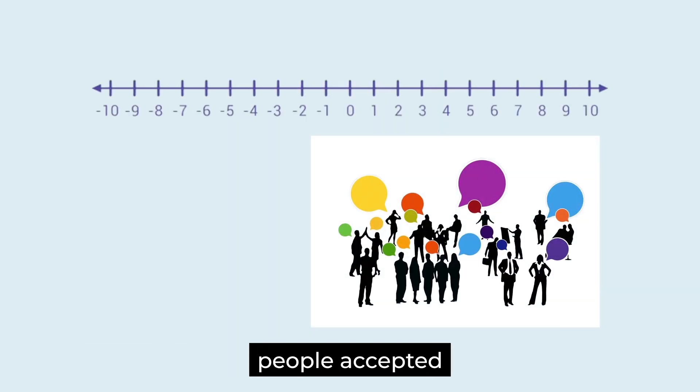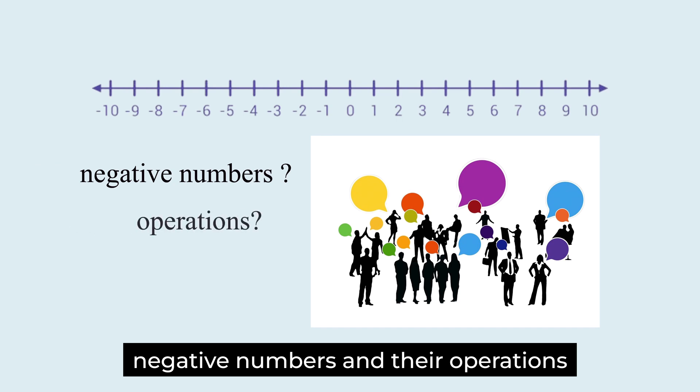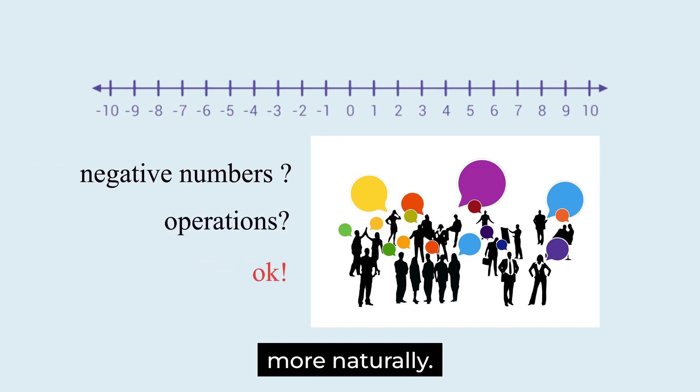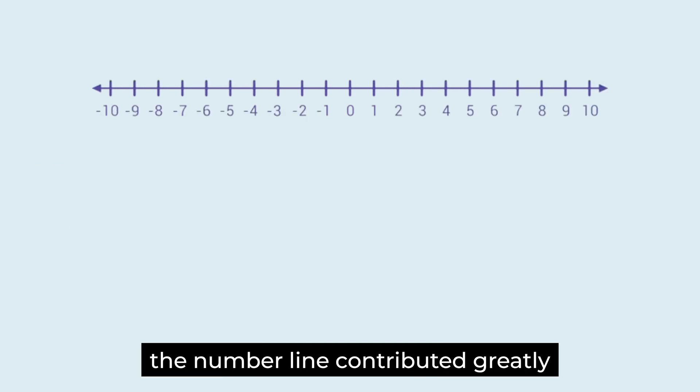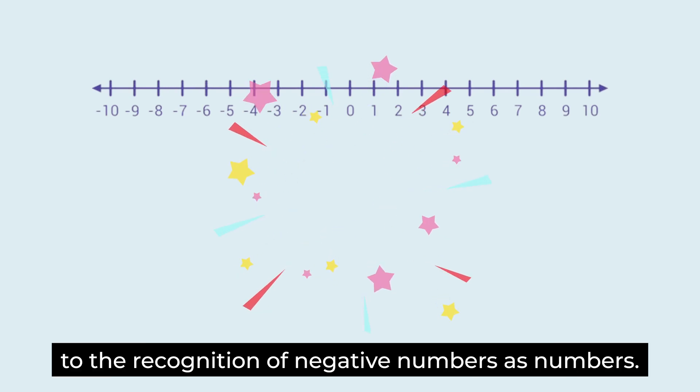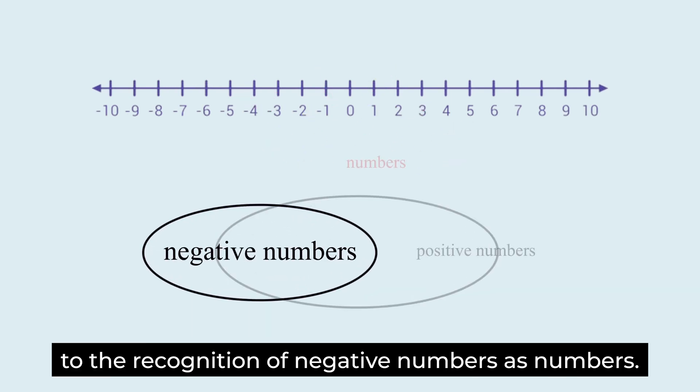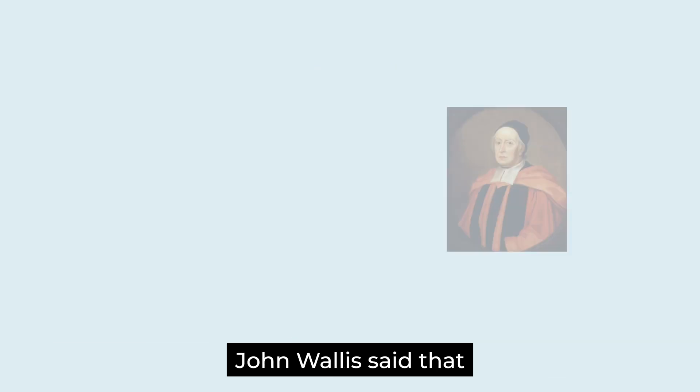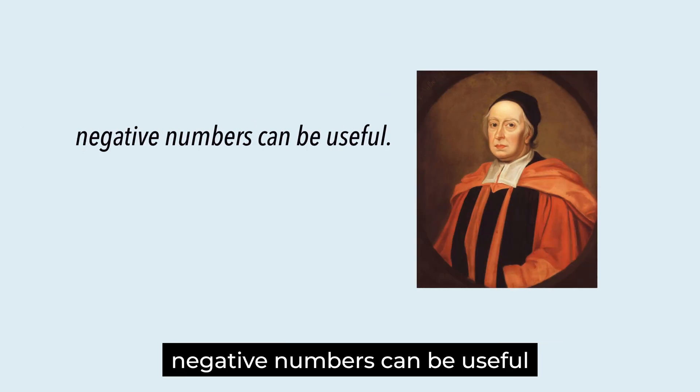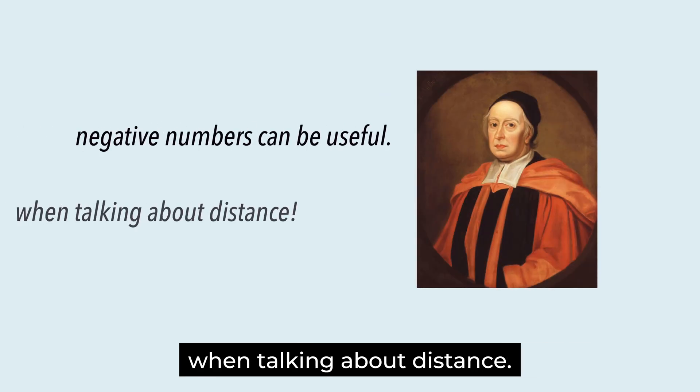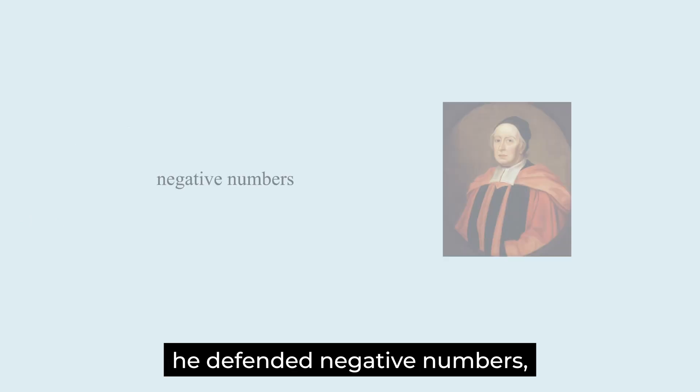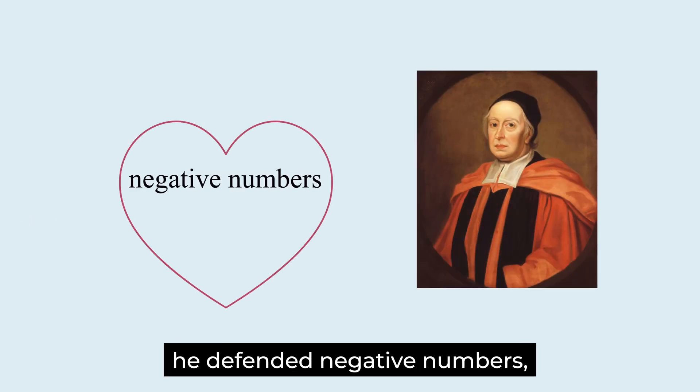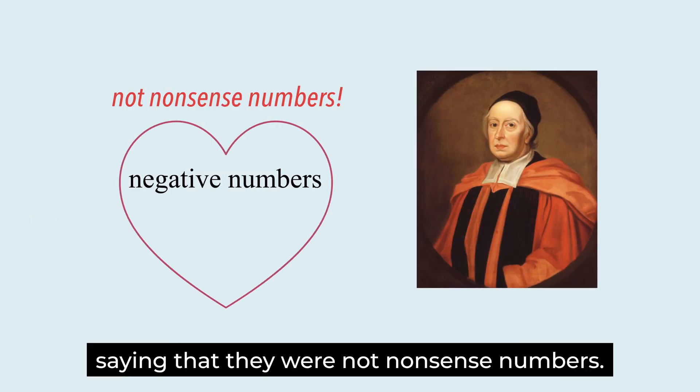Thanks to this, people accepted negative numbers and their operations more naturally. The number line contributed greatly to the recognition of negative numbers as numbers. John Wallis said that negative numbers can be useful when talking about distance. He defended negative numbers saying that they were not nonsense numbers.